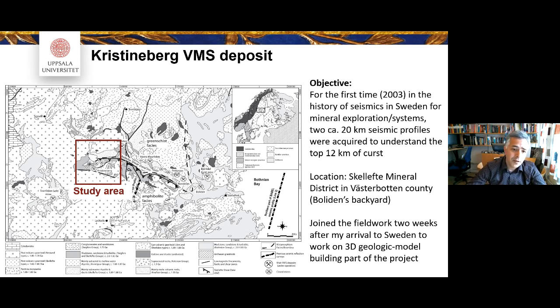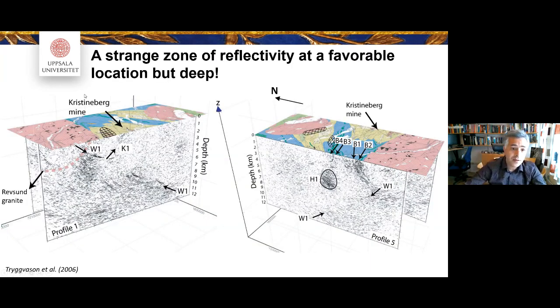And of course, later on, a few other 2D lines were acquired, but I think that was pretty much it. And it's a bit disappointing that more hasn't been acquired. And I hope it will be acquired soon. At the time, my task actually was to work with 3D geologic model building, but I ended up processing seismic data. So I'm just going to show you two lines. This is Kristineberg, as you can see it here. It's a 12km section.